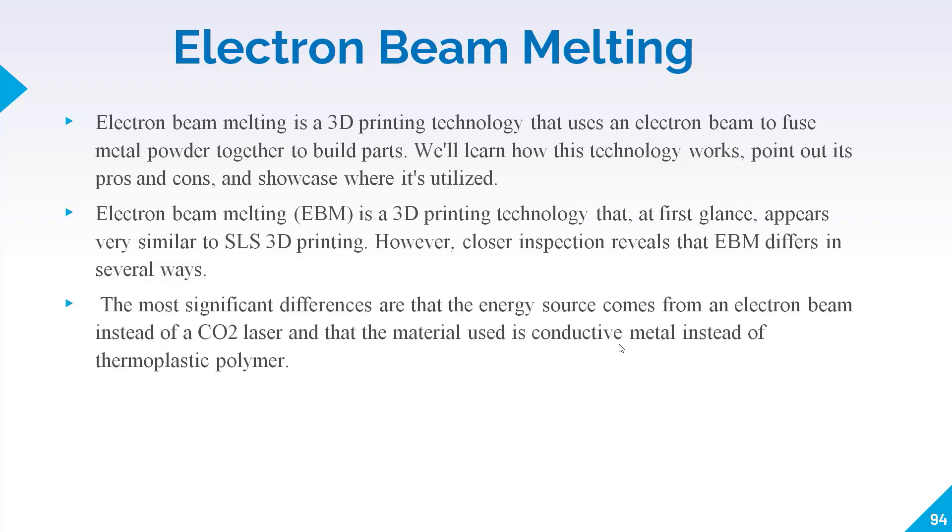So there are two main broad differences between electron beam melting and selective laser sintering. One is that in SLS we use laser for melting our raw material or powder, but in EBM we will use an electron beam. The second difference is that electrons can only travel in metals.